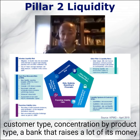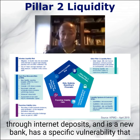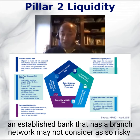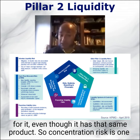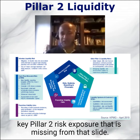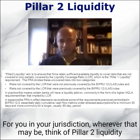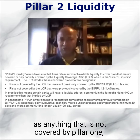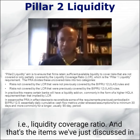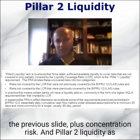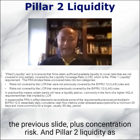A bank that raises a lot of its money through internet deposits and is a new bank has a specific vulnerability that an established bank with a branch network may not consider as risky, even though it has that same product. So concentration risk is one key Pillar 2 risk exposure that is missing from that slide.